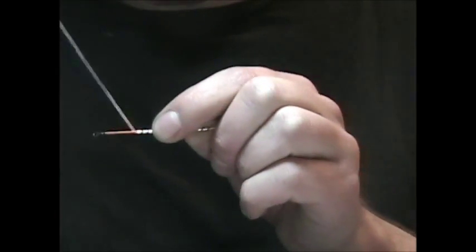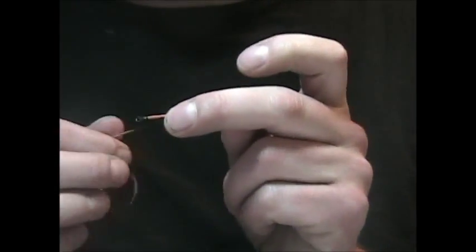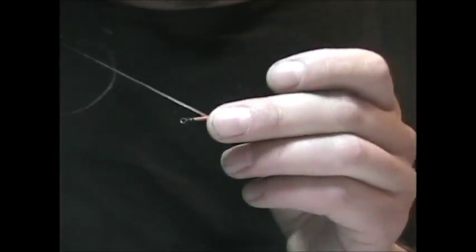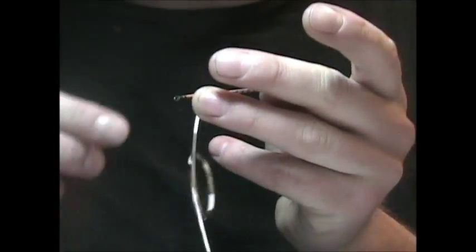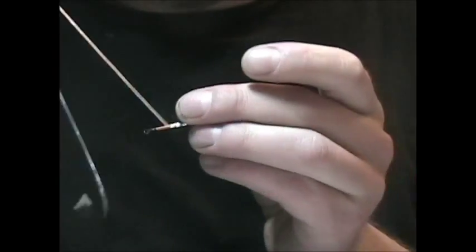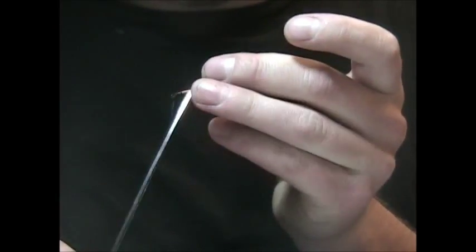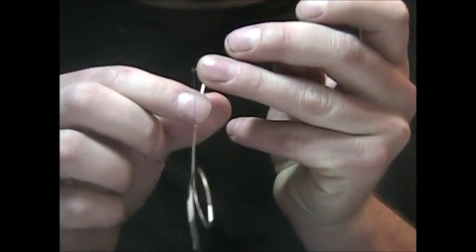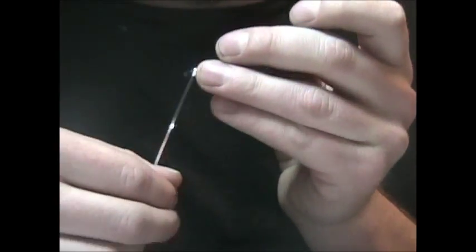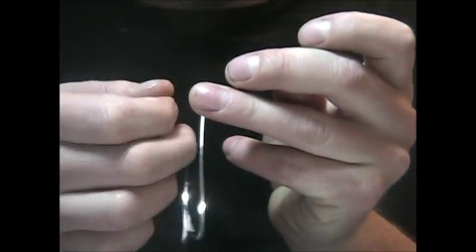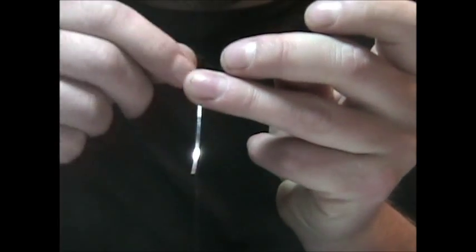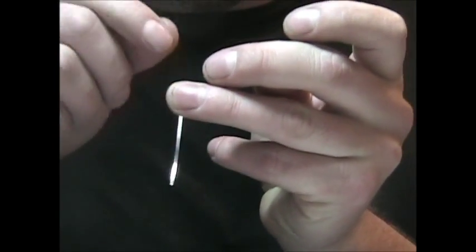Pretty much once you set your angle that you're working with it's pretty easy to keep it, mostly because the tinsel is going at a certain angle. To keep it tight and around the body it'll progress at the same rate all the way up. Once you get up to the head just make sure you're careful when you're tying it off, as tinsel does like to cut thread.